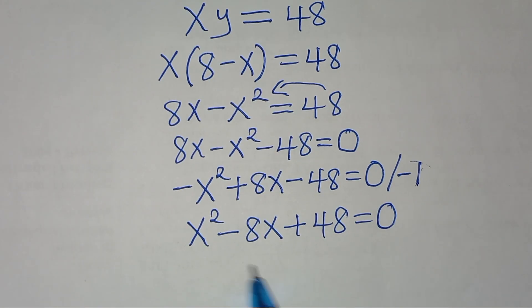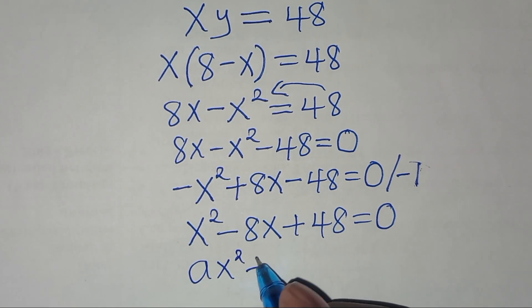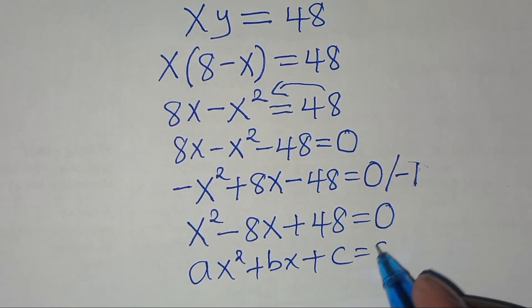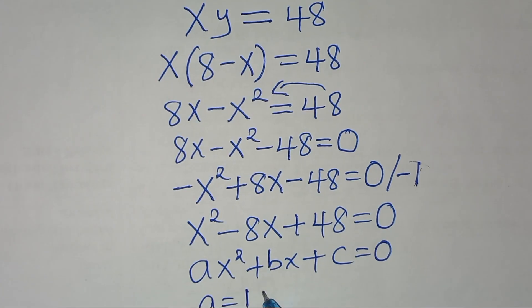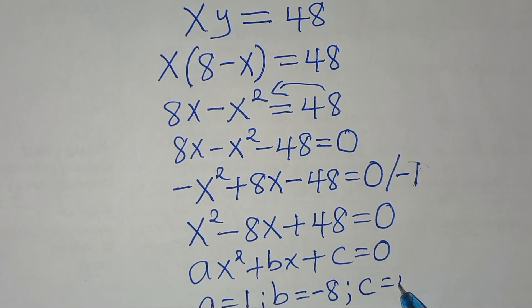This is a quadratic equation of the form ax squared plus bx plus c equals 0. From our equation, a equals 1, b equals minus 8, and c equals 48.